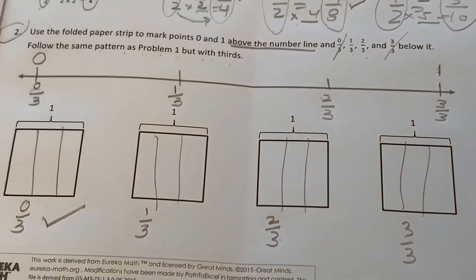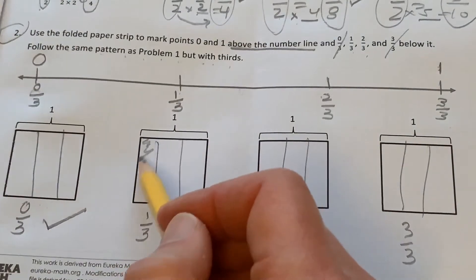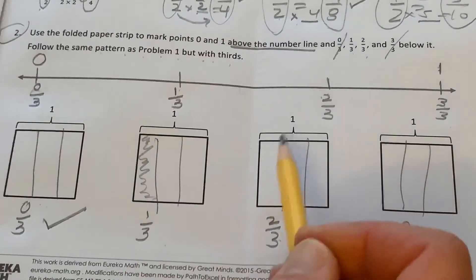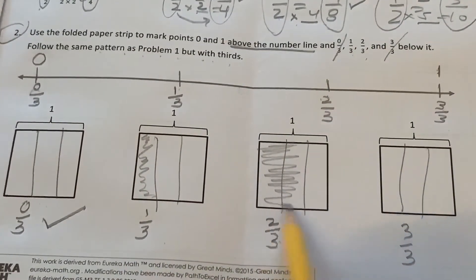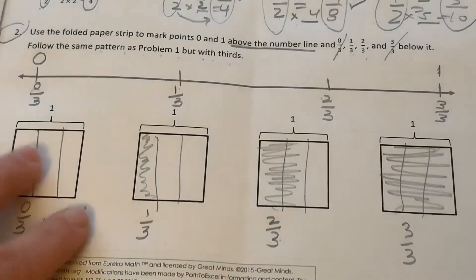Okay. So, to check your answers, if you already did it, you should have one rectangle shaded here, two rectangles shaded here, and three rectangles shaded here. Turn the page.